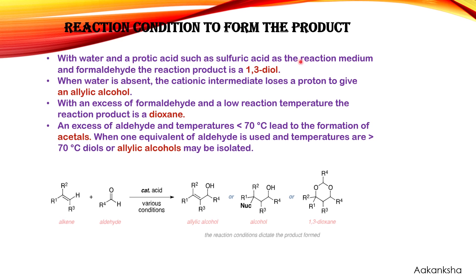With water and a protic acid such as sulfuric acid as reaction medium and formaldehyde, the reaction product is 1,3-dioxane. When water is absent, the cationic intermediate loses a proton to give the allylic alcohol — simply, when the nucleophile is absent, the intermediate loses a proton to give allylic alcohol. When excess formaldehyde is present and the reaction temperature is low, we generally get 1,3-dioxane. With excess aldehyde and temperature less than 70°C, the product is the acetal.